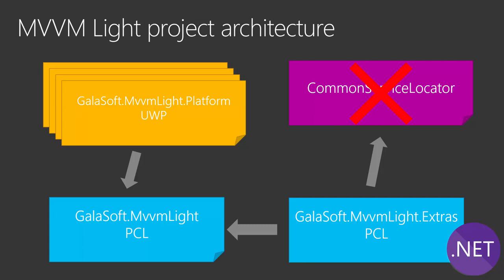I was not even a contributor on the project, so I was depending on someone else to do the work. When they finally released for .NET Standard, they chose 2.0. I'm not sure if it was because they had to, or because they didn't follow the advice to go as low as possible. Either way, that was an issue for me — if Common Service Locator is 2.0, I can't stay at 1.0.